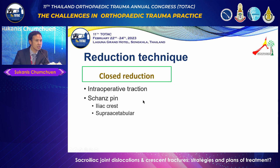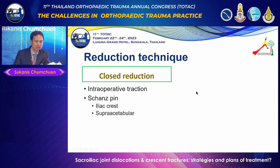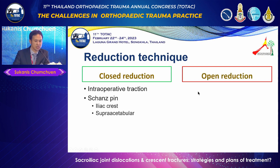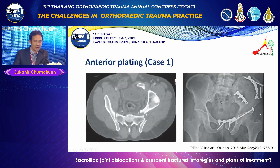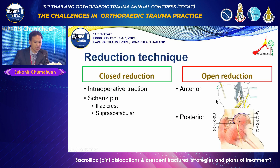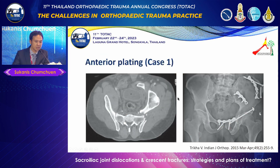This is my strategy when facing this injury. For reduction technique, we try closed reduction first using traction and Schanz pins at the iliac crest or supraacetabular region. If closed reduction cannot be achieved, do not hesitate to perform open reduction from the anterior first. If anterior reduction cannot be achieved through the anterior approach, we may use the posterior approach — in cases of late presentation or irreducible fracture.